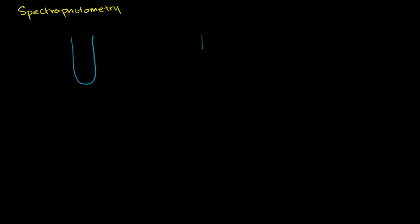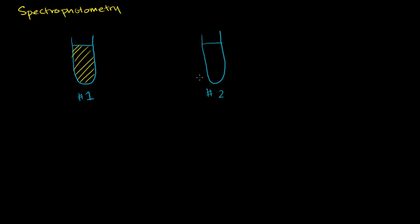That is solution one, and then this is solution two. Let's just assume that our beakers have the same width. Now let's say solution number one has less of the solute in it — so this has less of it. Let's say it's yellow, or to our eyes it looks yellow. And solution number two has more of the solute, represented as more closely packed lines. So the concentration of the solute is higher here — higher concentration — and this is a lower concentration.